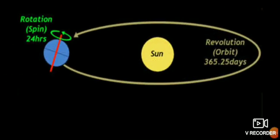So now we have learned that the earth rotates around its axis, and this axis is at a 23 and a half degree tilt. The spinning movement of the earth takes 24 hours. Now apart from this movement, the earth is also going around the sun. That yellow color line around the sun in that picture shows that the earth is moving around the sun, and this movement of the earth around the sun is called the revolution of the earth. It takes 365.25 days.